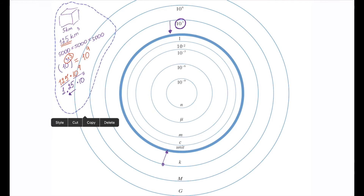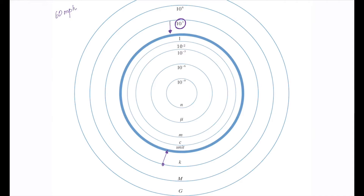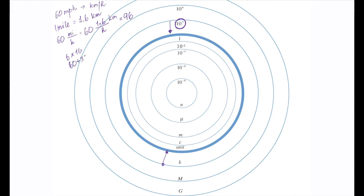What if you have 60 miles per hour and you want to convert to kilometers per hour? Each mile is 1.6 kilometers. So you take 60 miles per hour and replace miles with 1.6 kilometers: 60 times 1.6 equals 96 kilometers per hour. Six times 16 is 60 plus 36, which gives 96.